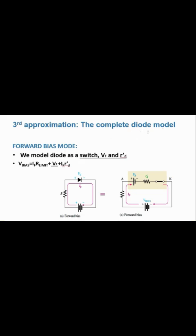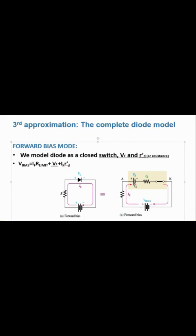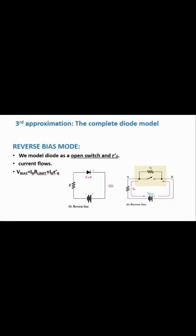Now for the complete diode model. In forward bias mode, we replace the diode with a closed switch, Vf, and r'_b — where r'_b is the internal resistance of the diode, also called the AC or dynamic resistance. The KVL equation becomes: V_bias = Vb + I_f × r'_d + I_f × R_L, distributing voltage across all three components.